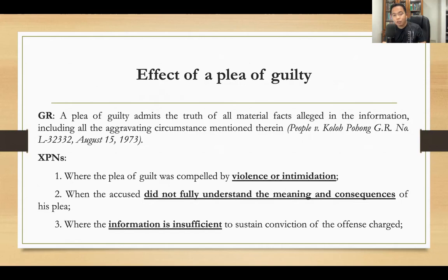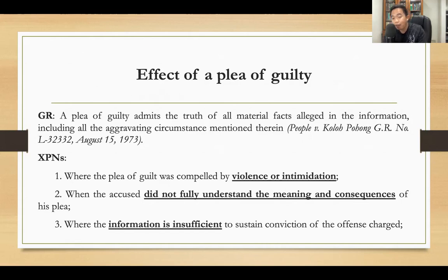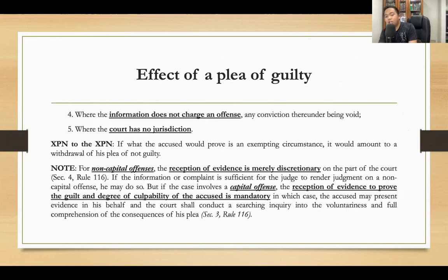There are exceptions wherein a plea of guilty carries no admission that the accused is the author of the crime. These are: first, when his plea of guilty was extracted by violence, intimidation, or torture; second, when the accused did not fully understand the meaning and consequences of his plea; third, when the information is insufficient to sustain the conviction; fourth, when the information does not charge an offense; and fifth, when the court has no jurisdiction.